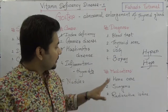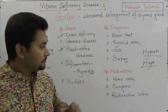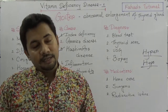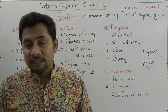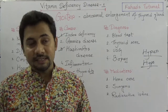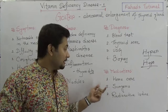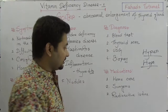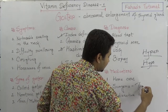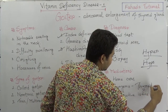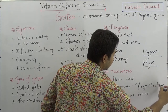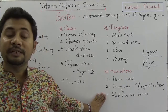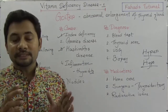For treatment, home care is important depending on the severity — encouraging iodine-rich food intake. However, if the enlargement is dangerous, surgery such as a thyroidectomy can be performed. In other cases, radioactive iodine therapy can be used for mitigation of goiter.